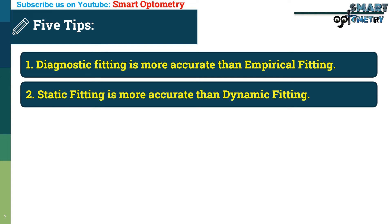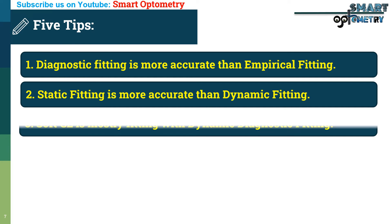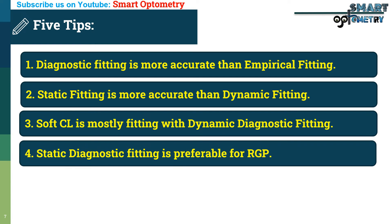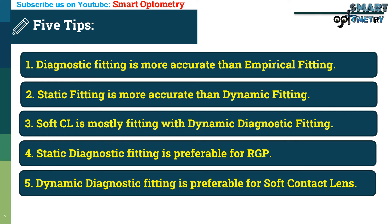Tip 2: Static fitting is more accurate than dynamic fitting, because in static fitting we use fluorescent dye, which gives more visual appearance that helps us to identify flat, steep, or optimal fitting more accurately. Tip 3: Soft contact lenses are mostly fitted with dynamic diagnostic fitting, because soft contact lenses tend to take the color of dye, and in dynamic fitting we don't use any kind of dye. Tip 4: Static diagnostic fitting is more preferable for rigid gas permeable contact lenses. Tip 5: Dynamic diagnostic fitting is more preferable for soft contact lenses.